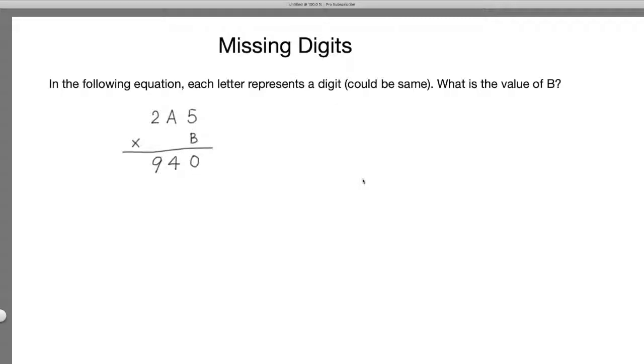So let's look at a warm-up question. In the following equation, each letter represents a digit, could be the same. What is the value of B? The equation reads 2A5 times B equals 940. 2A5 is a three-digit number, B is a single-digit number, and the multiplication result is 940. So how do you solve it?